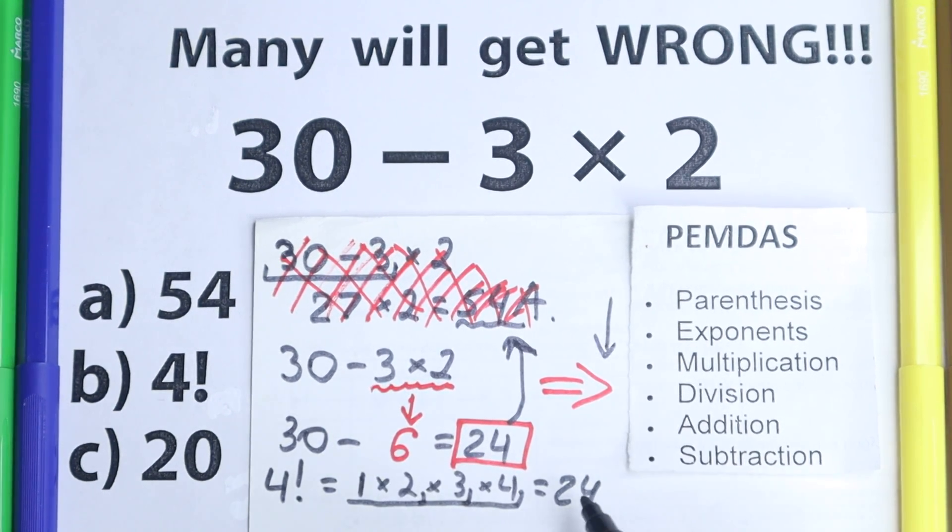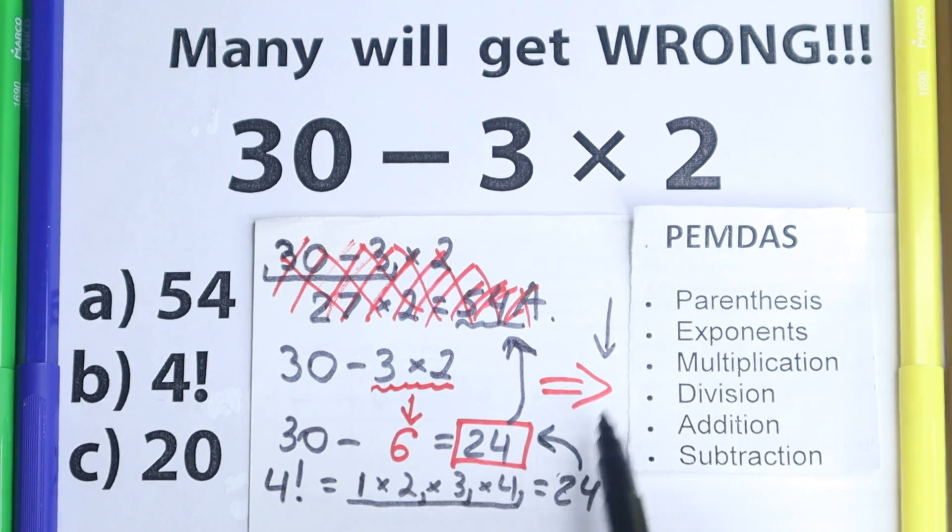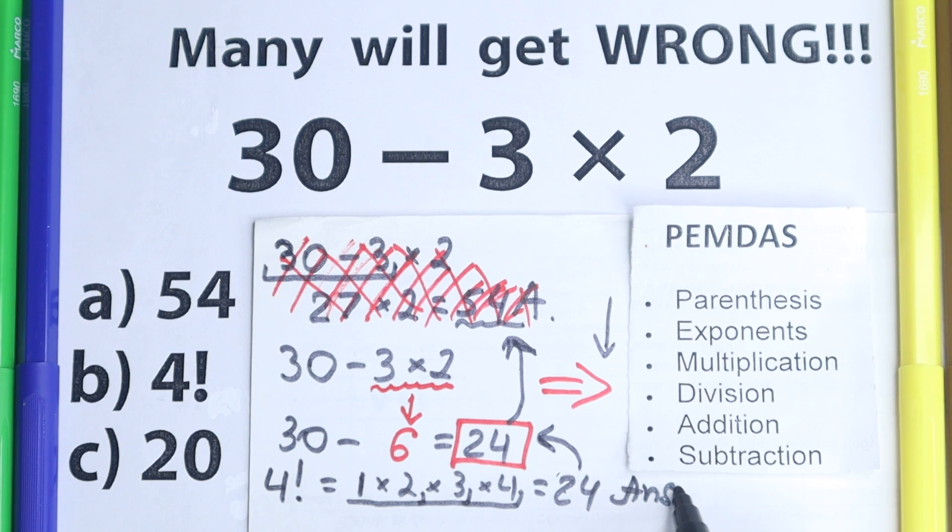So as you can see, option B is 24. Option 4 factorial is the same as 24, the same as our answer, which is absolutely correct because this is according to PEMDAS, this is according to order of operations. And moreover, if you prefer BODMAS, you can easily solve it with BODMAS. So answer option B is the correct answer.